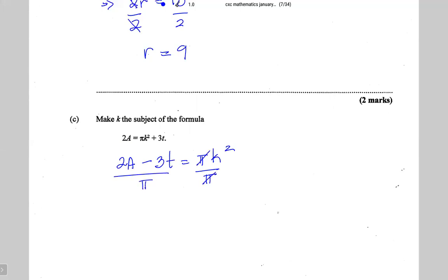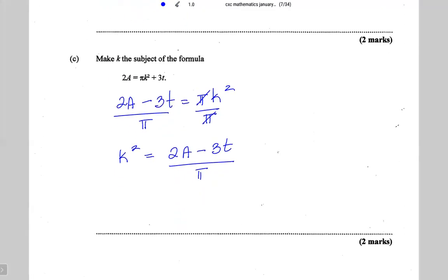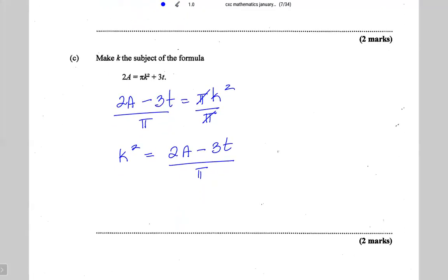Next I'm going to divide both sides by pi to leave k squared alone on the right. So k squared equals (2a minus 3t) divided by pi. The opposite of squaring is taking the square root, so k equals the square root of (2a minus 3t) divided by pi.